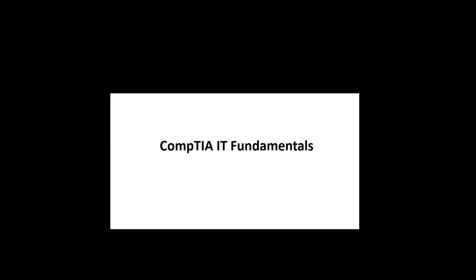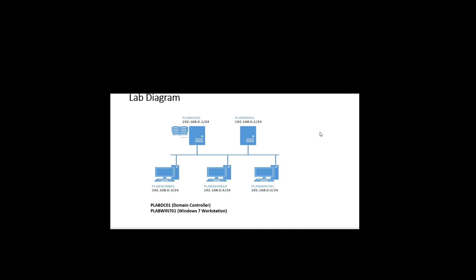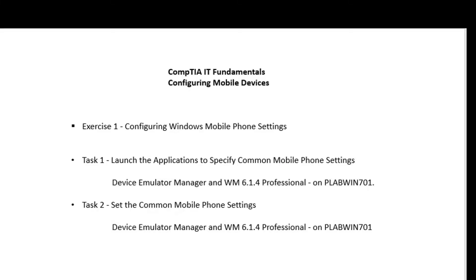This lab is an entry-level introduction to the IT industry. We are going to be doing some hands-on experience, looking at configuring mobile devices. This module will help you develop your hands-on skills on how to configure mobile devices. We will be configuring Windows Mobile phone settings with applications such as mobile device emulators and network emulators. For this module we are going to be using Practice Lab GC01, which is the domain controller, and Practice Lab Windows 7.